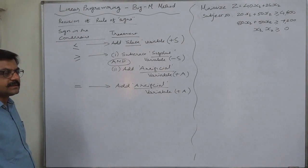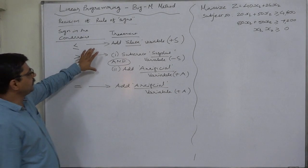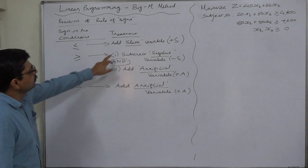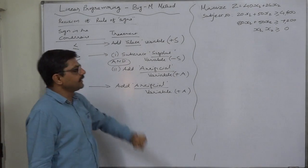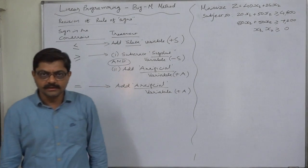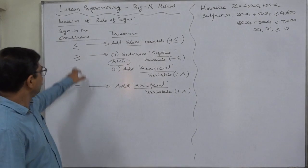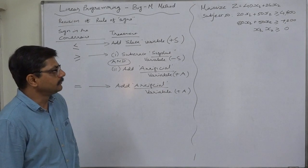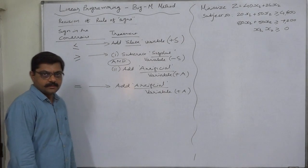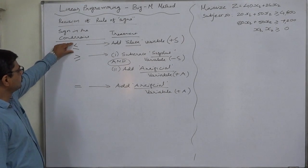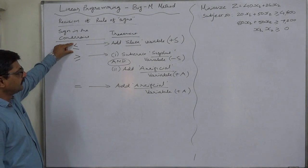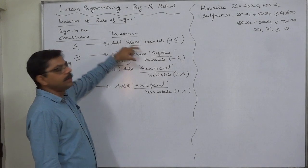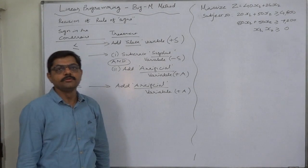The rules of signs which are part of inequalities or constraints: if the sign is less than or equal to, then we have to add slack variables in all the constraints or inequalities with that sign. We have already solved a few examples having this type of sign. The slack variable shows the unused capacity or unused resources.